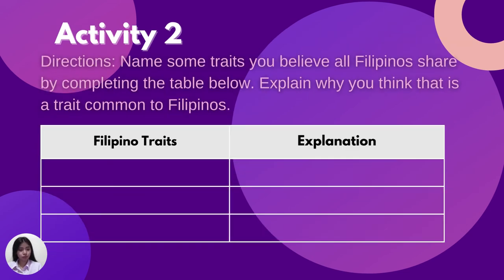Let's move on to activity two. The direction for activity two is: name some traits you believe all Filipinos share by completing the table below and explain why you think that is a trait common to Filipinos. For this activity, you can give at least three traits with an explanation for each — three as the minimum and five as the maximum. You can pause the video to answer this activity.